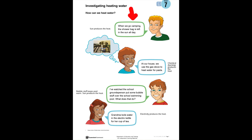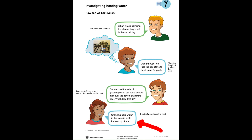In this photo, the sun produces heat for heating up the water in the shower bag. Here, chemical burning produces the heat to heat up the water for pasta. Over here, the sun produces heat to warm up the pool. And here, electricity is used to produce the heat for boiling water for a cup of tea.